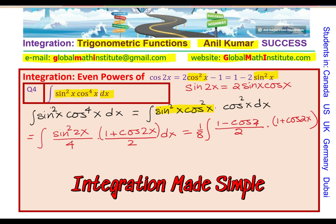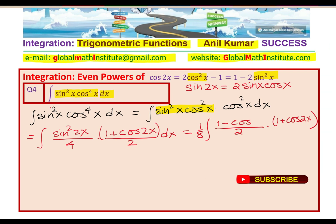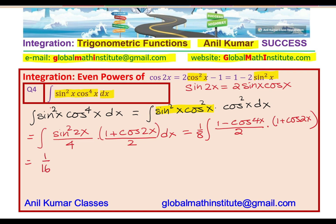So sin²2x, I am writing as 1 minus cos 4x by 2. We have already taken the 8 outside, so now this is divided by 2, times 1 plus cos 2x. So 2x will become 4x, because it is a double angle.